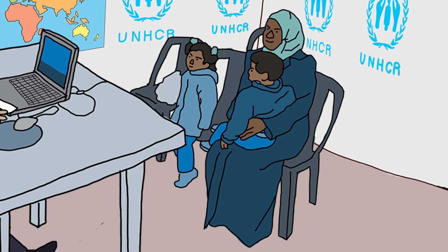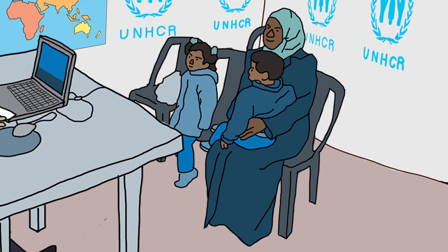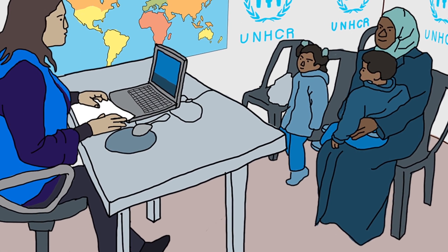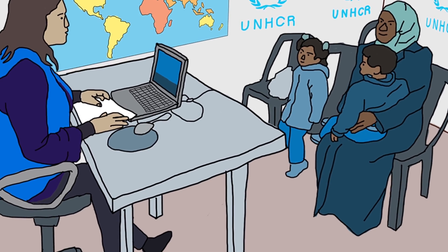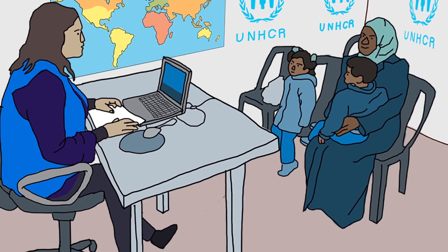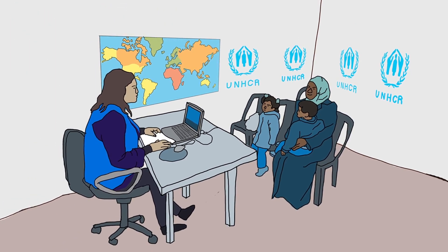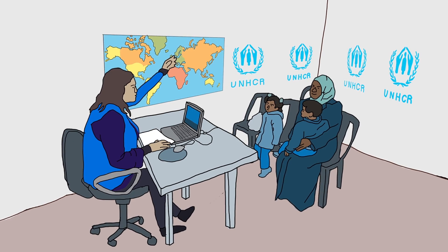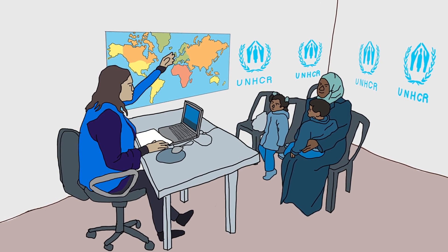Depending on their situation, some refugees may be transferred from a first country of asylum to another country in a process called resettlement. Resettled refugees go through a very rigorous selection process involving UNHCR and the receiving country.